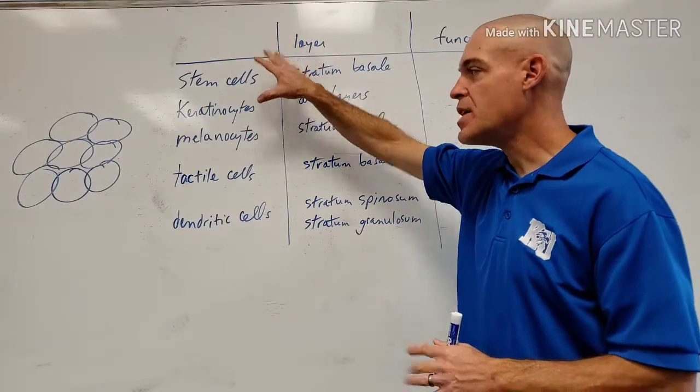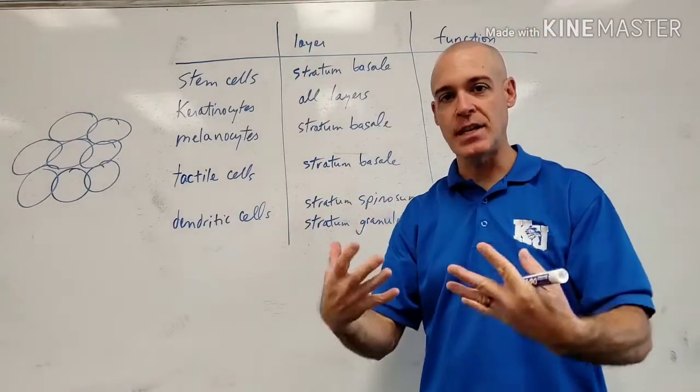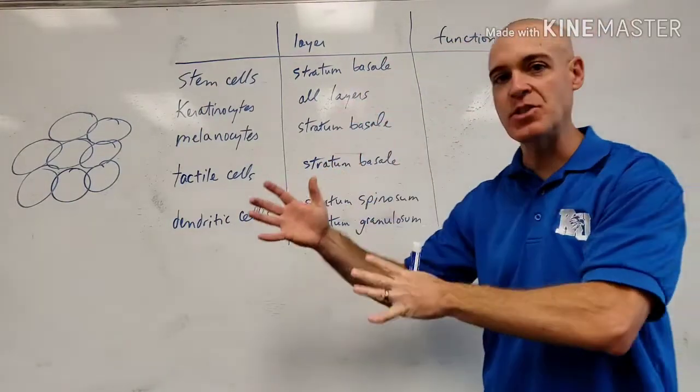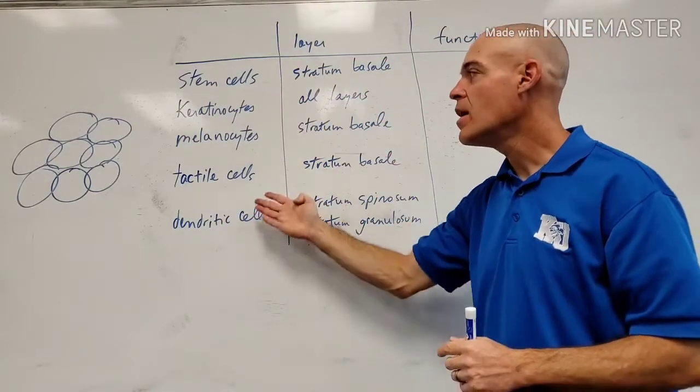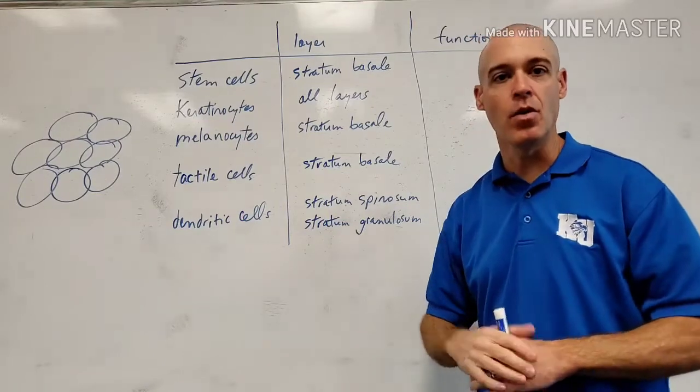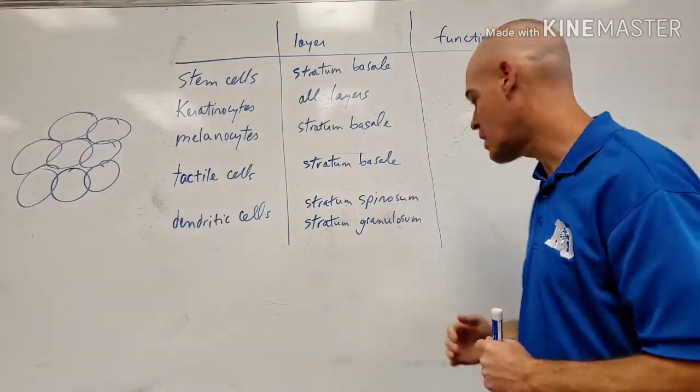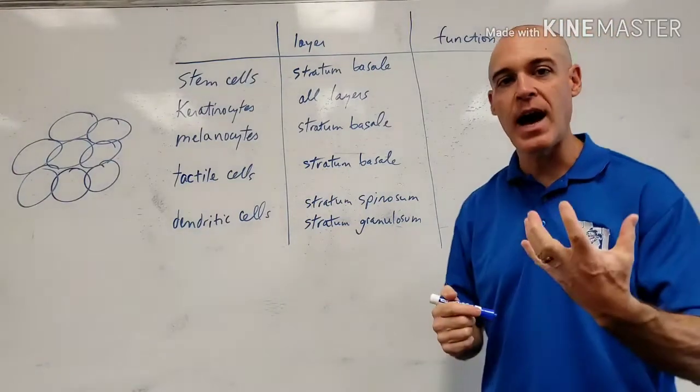These are the additional cells in addition to that stratified squamous epithelium, which is the predominant cell type. These are the other specialized cells found within the epithelial layer of the epidermis. So let's go through these five specialized cells.